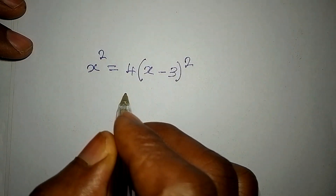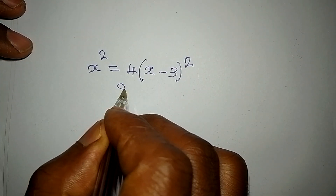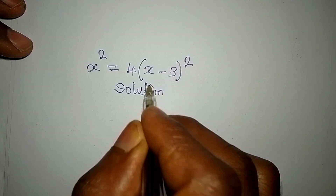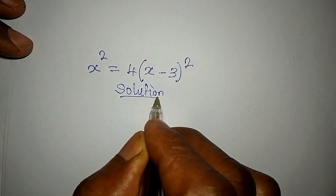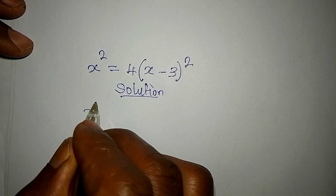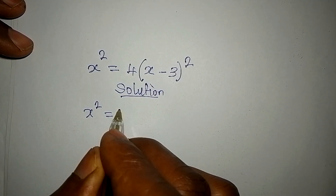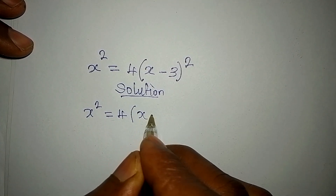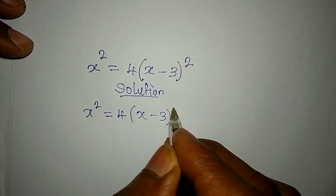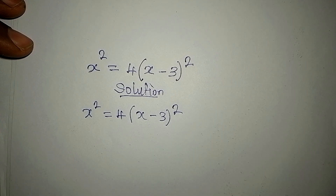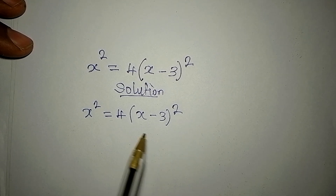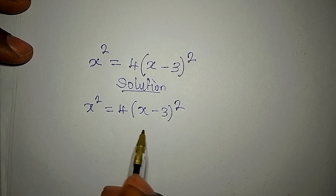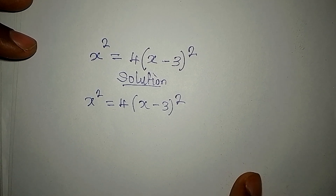Hello everyone, welcome to Feel Cool Mathematics. We have x squared equals 4 into bracket x minus 3 to the power of 2. This is a problem sent to me by one of my followers on YouTube, and I promised I was going to solve it.